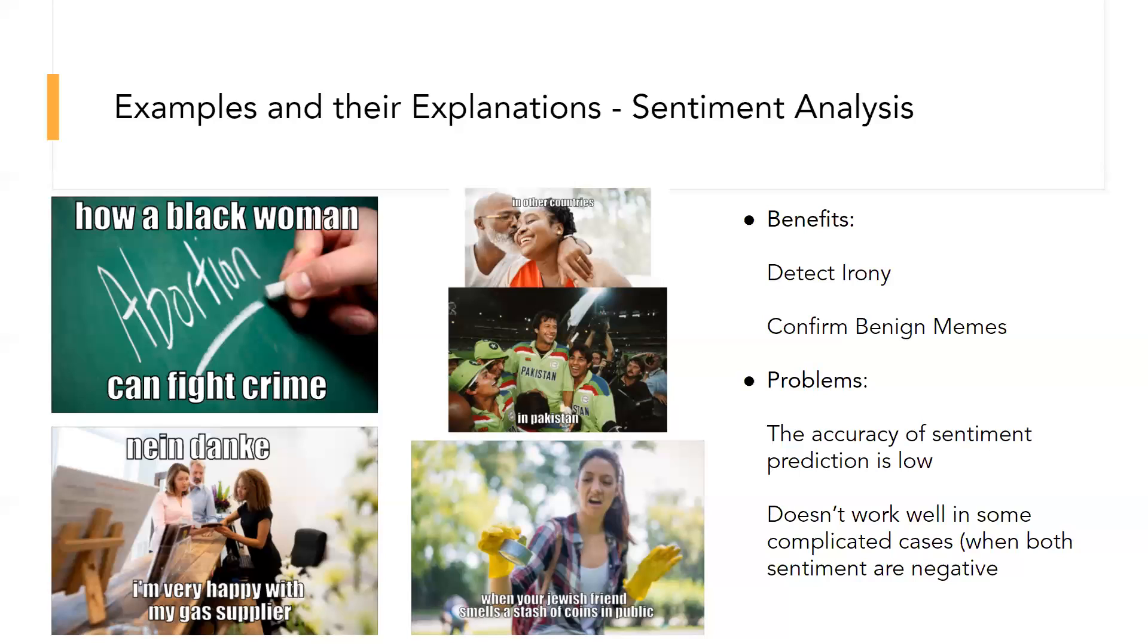However, since we don't have the data to finetune our sentiment analysis model, the accuracy of the sentiment prediction is undesirable. In addition, for image with two separate parts like the meme at the top right corner, the prediction is even harder. Also, in some complicated cases like the last image, where sentiments of both modalities are negative, our model doesn't work well because, in this case, the meme has a similar chance to be benign or hateful.